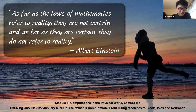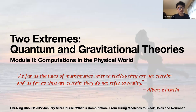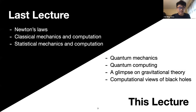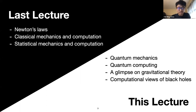Hello everyone. This is the second lecture of the physics module in the mini course on computation. Last time we talked about Newton's law, classical mechanics, and statistical mechanics and their relation to computation. Today we are going to cover more modern topics, especially on quantum and gravitational theory.